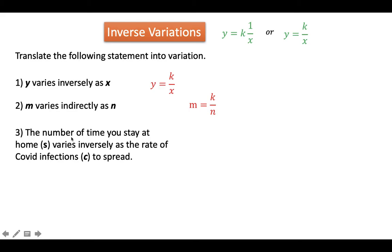For number 3, the number of times you stayed at home varies inversely as the rate of COVID infections to spread. The two quantities here are the number of times staying at home and the rate of COVID infections to spread. So it is represented by s and c, so s is equal to k over c, where k is in the numerator, which is the constant.